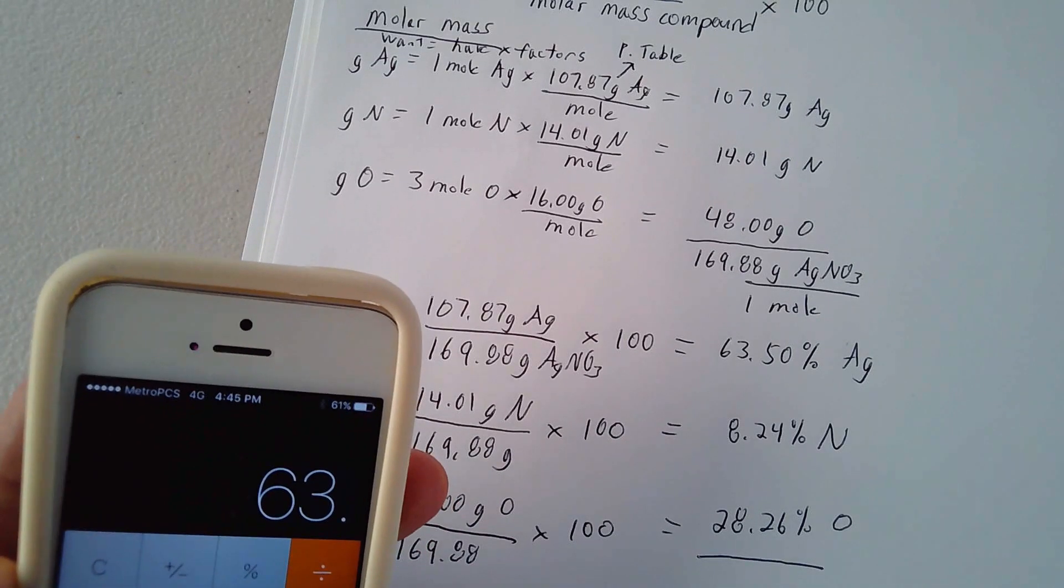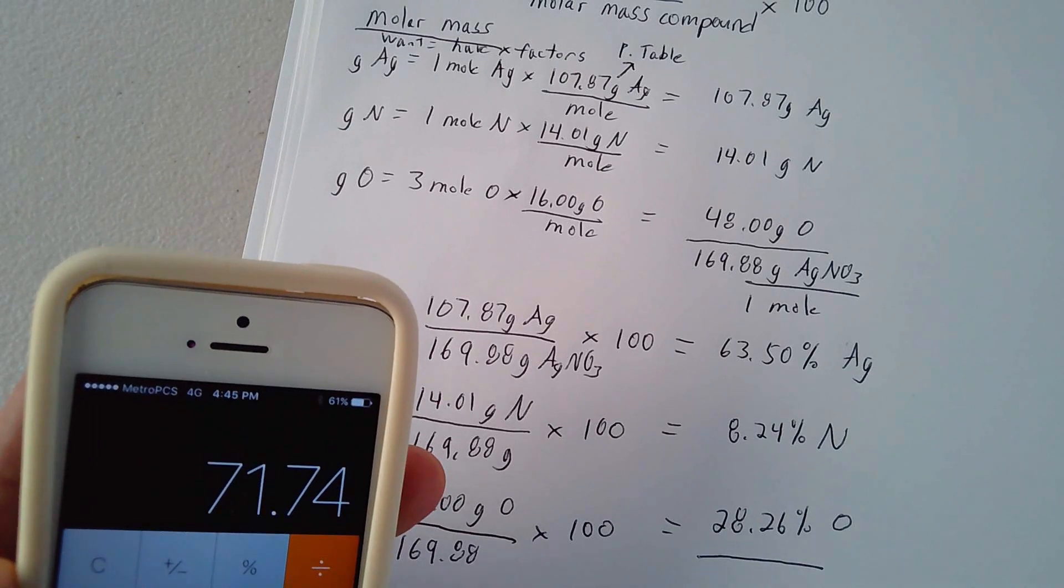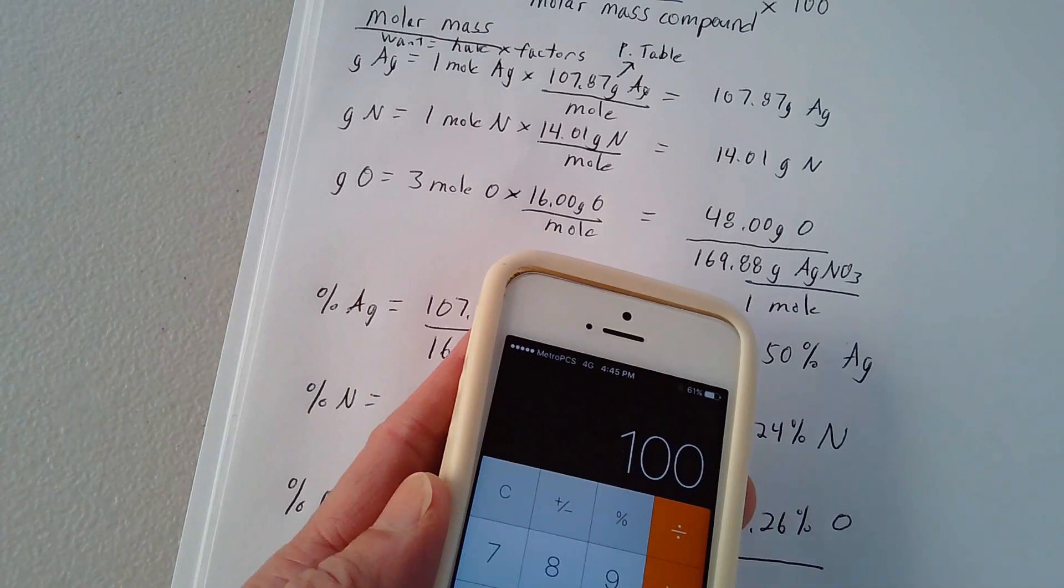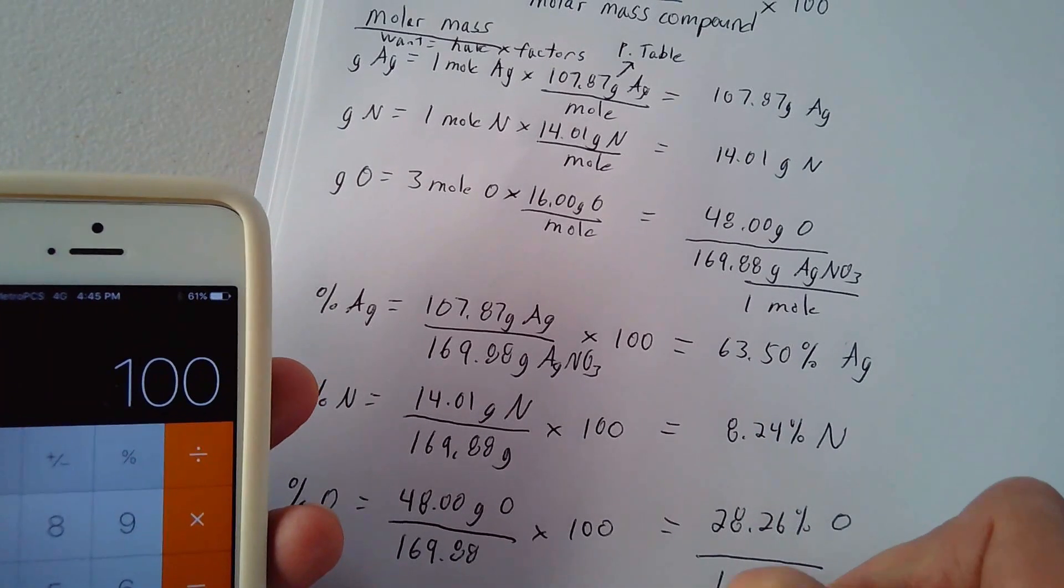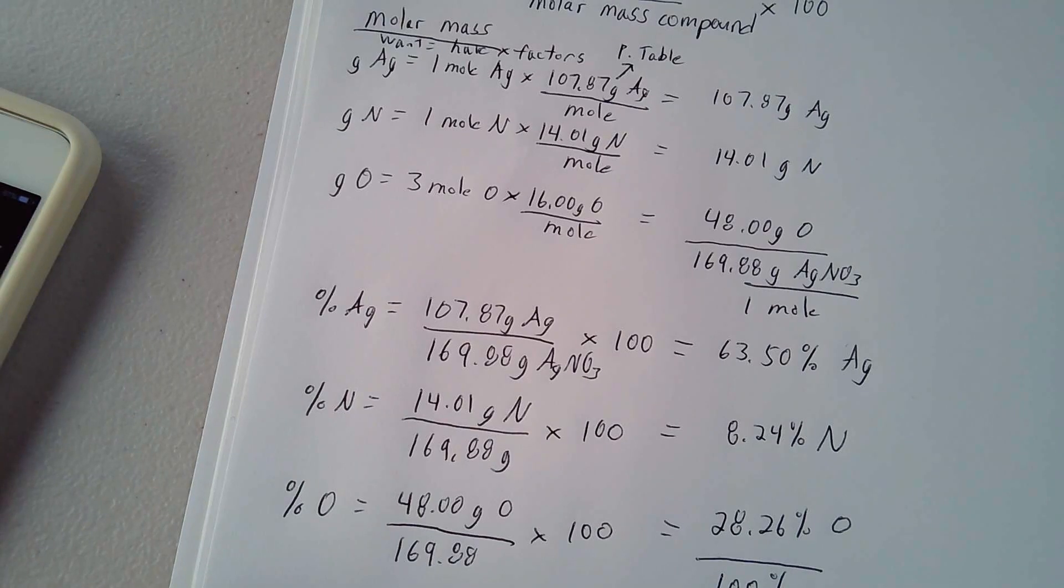63.5 plus 8.24 plus 28.26. And I got, look at that, 100%. So that's how you calculate the percent of an element in a compound.